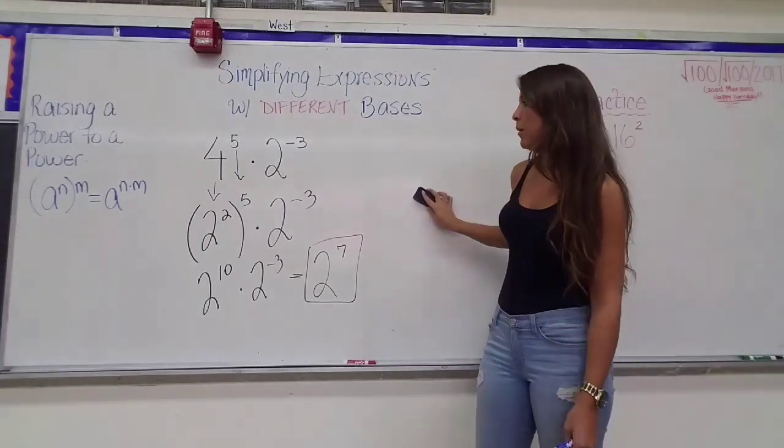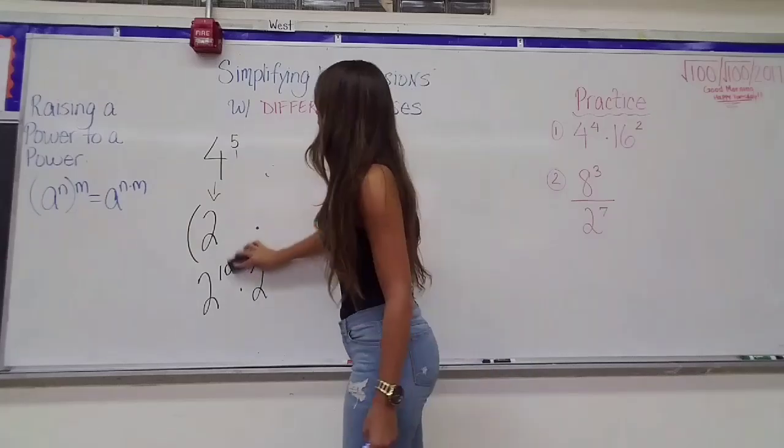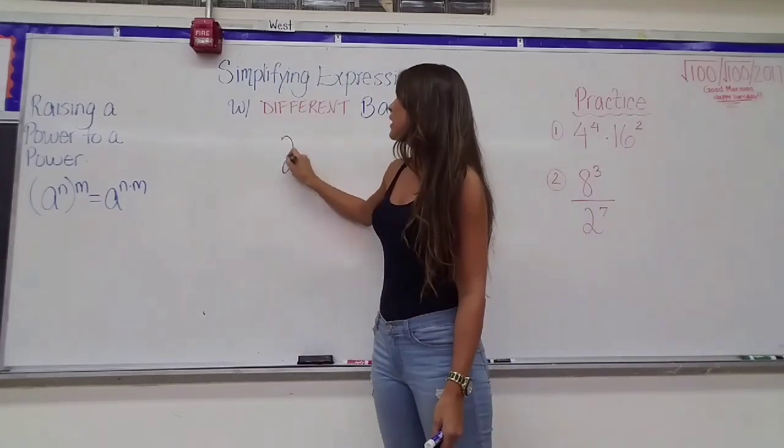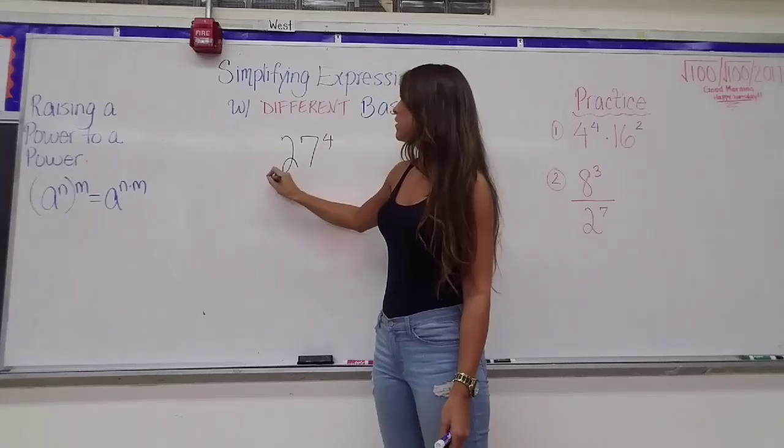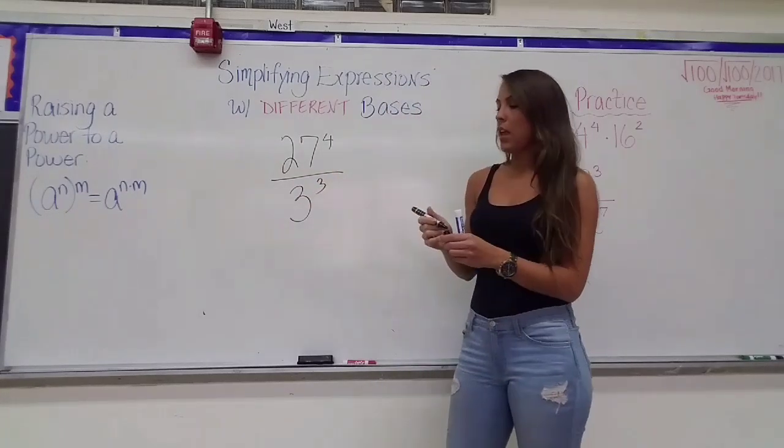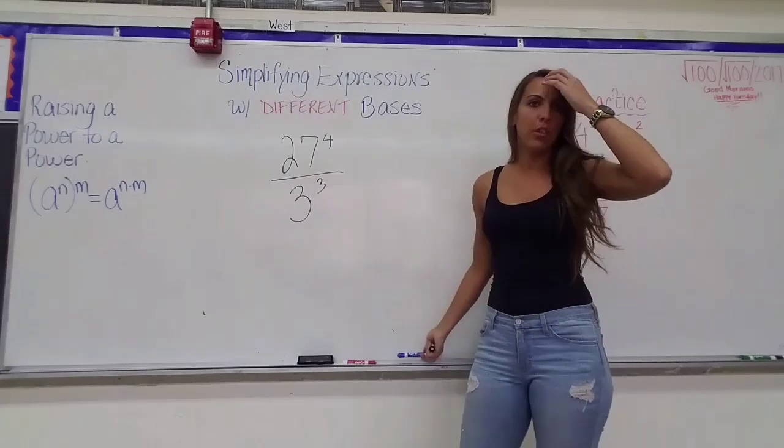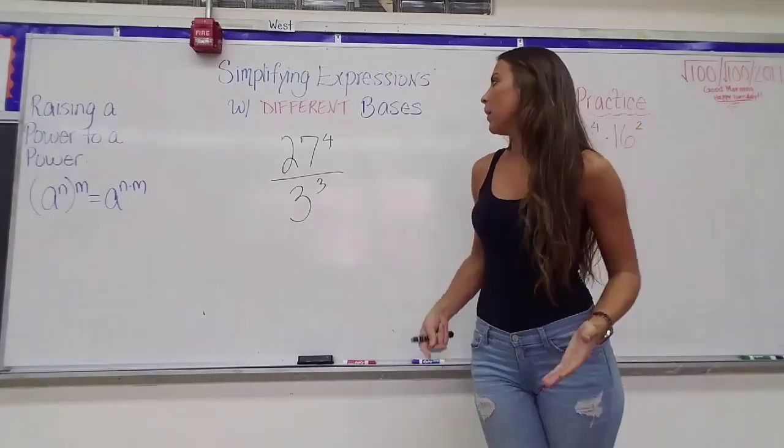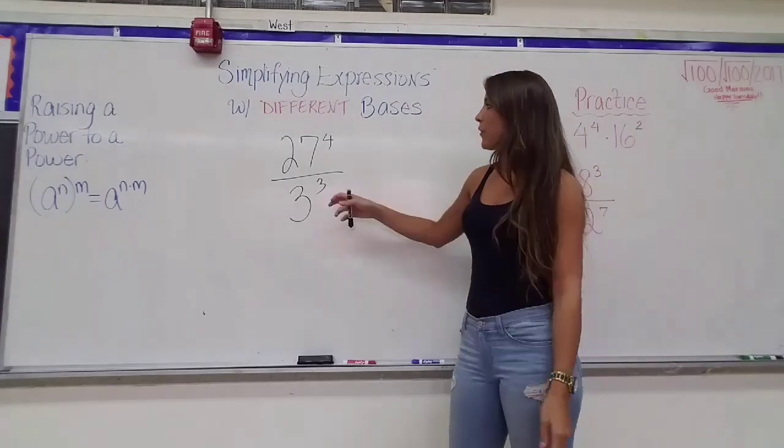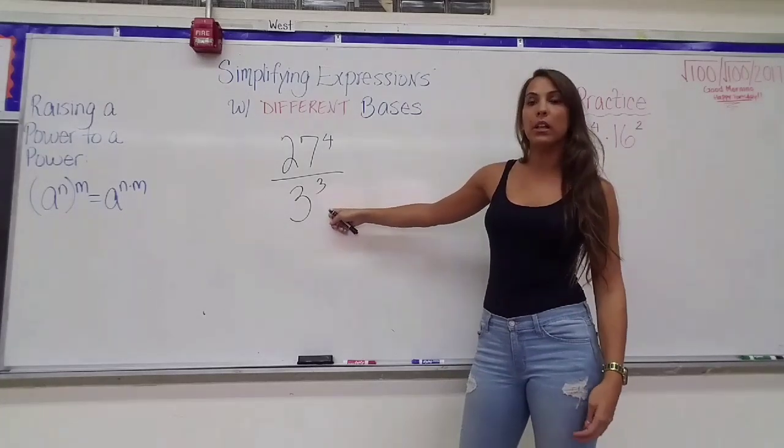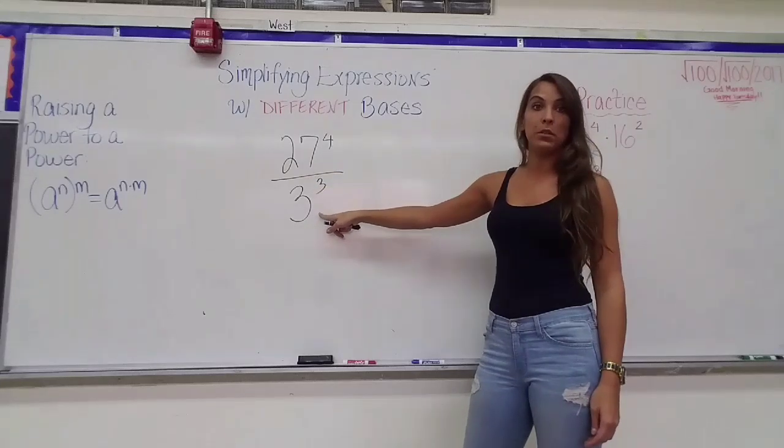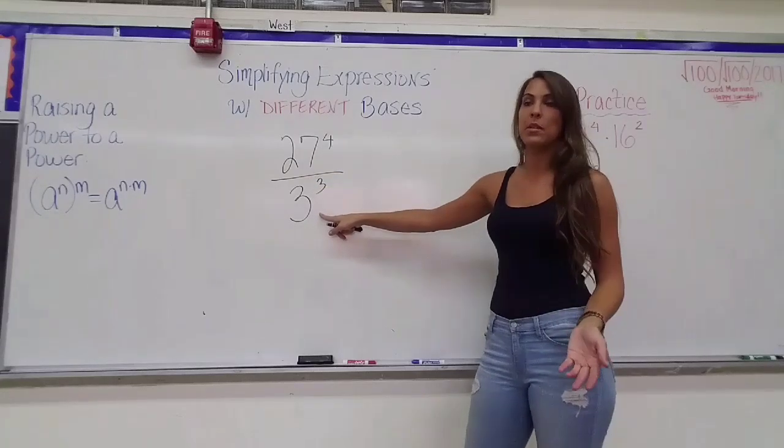Let's do a division one, because the same thing will apply with division. So let's say we've got 27 to the 4th power divided by 3 to the 3rd power. So we're looking at the 27 and the 3, they're not the same, and we're thinking about can we rewrite one as a power of the other one. So I start thinking about my powers of 3, and I quickly realize that 27 is the same thing as 3 cubed. 3 times 3 times 3 gives me 27.